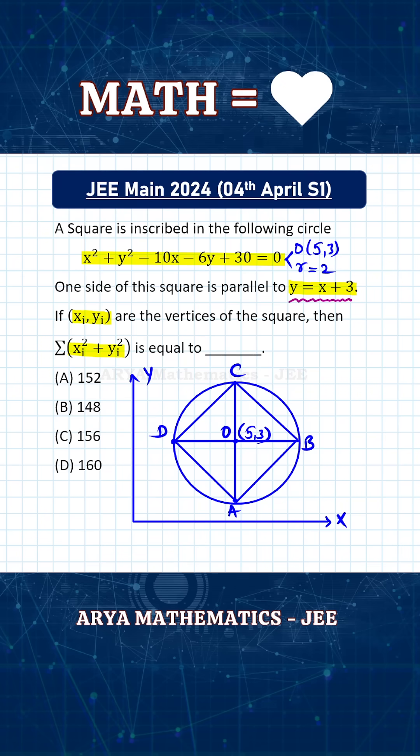Another interesting approach is if you see this line y = x + 3, the slope is 1, and if the slope is 1, that means the line is making 45° with the x-axis. Line AB is parallel to y = x + 3 and makes 45° with the x-axis. We know that the angle between a diagonal and side of a square is 45°.